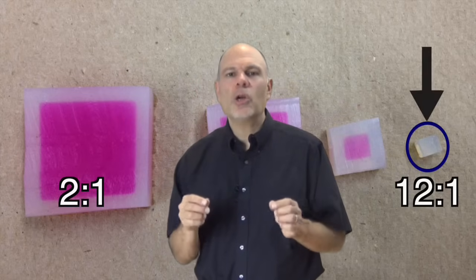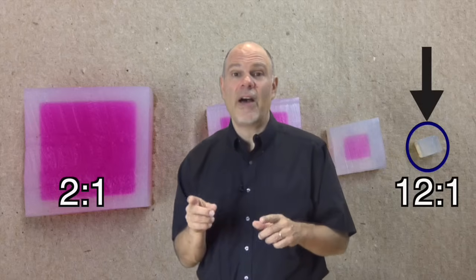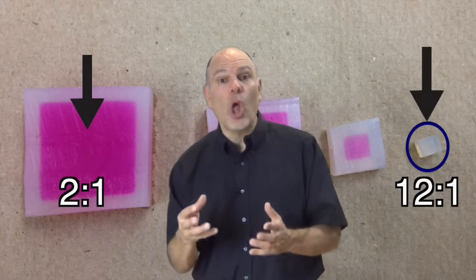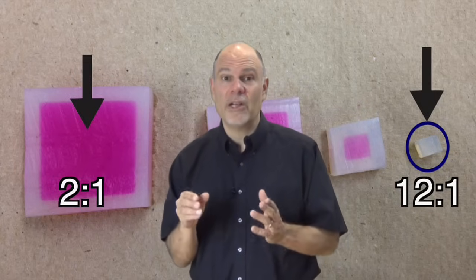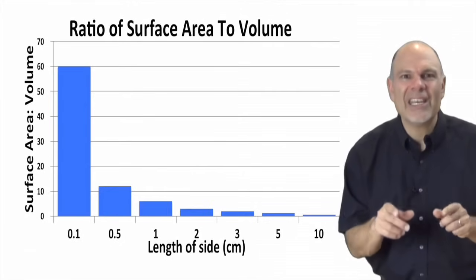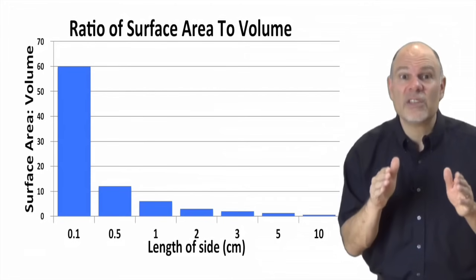The smaller a cube is, the larger its ratio of surface area to volume, and conversely, the larger a cube is, the smaller its ratio of surface area to volume. In other words, the larger something is, the less surface area it has relative to its volume.